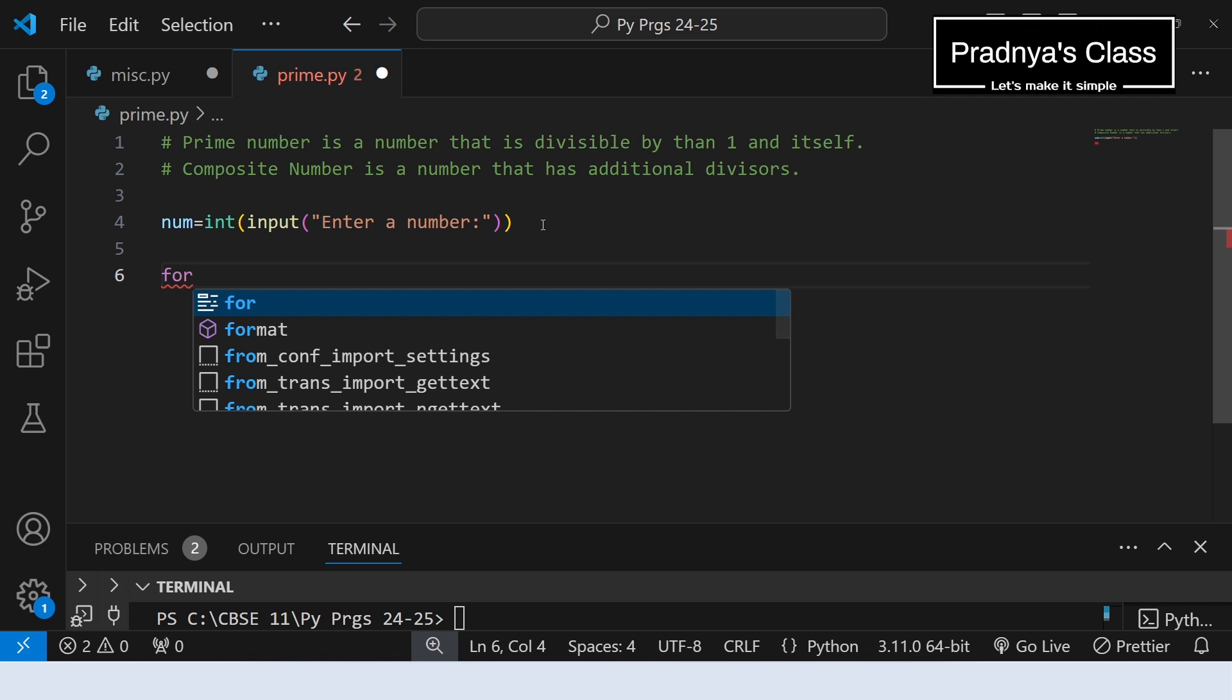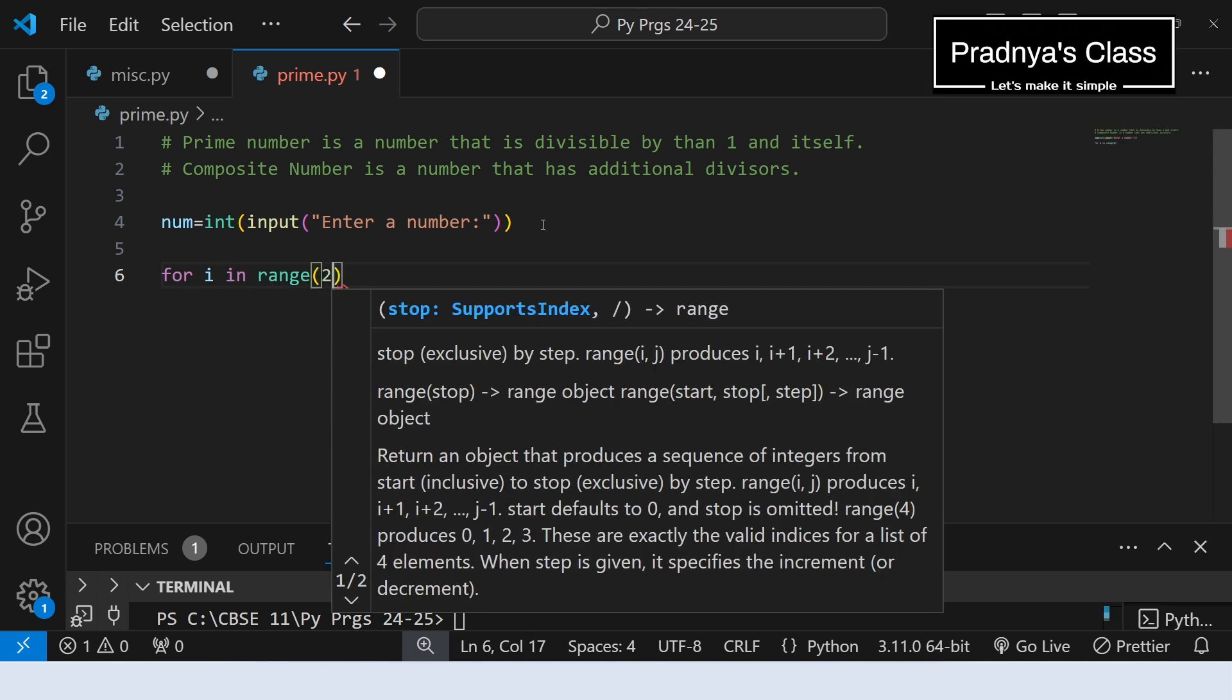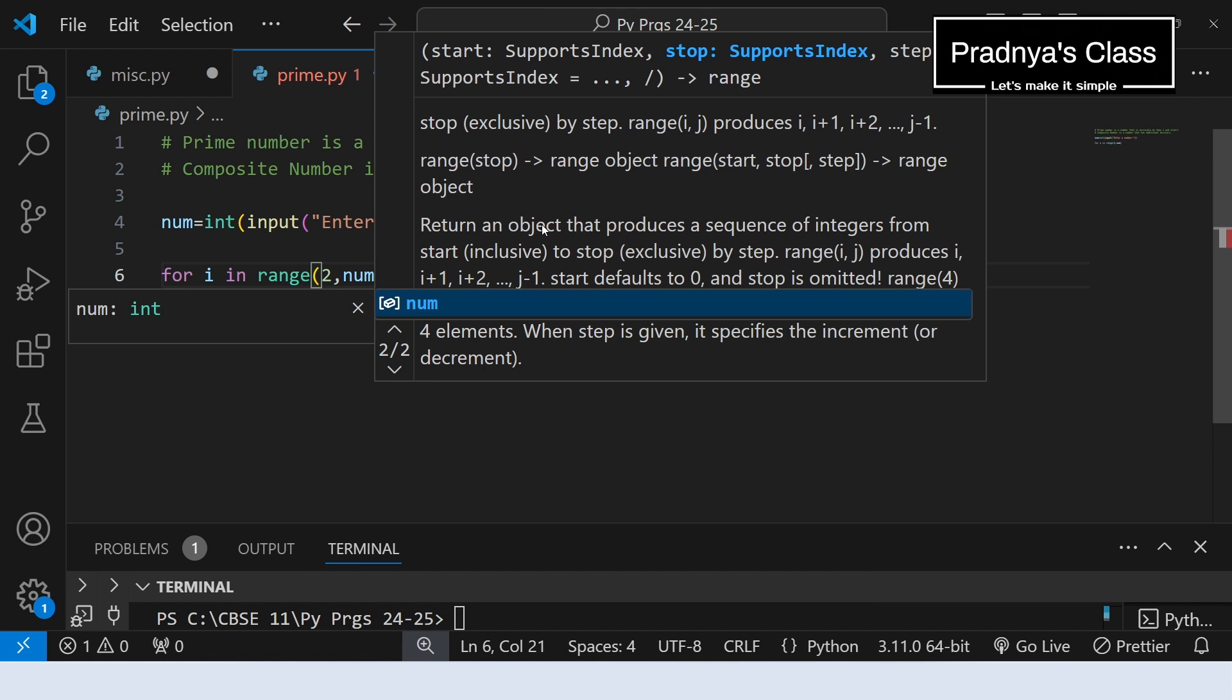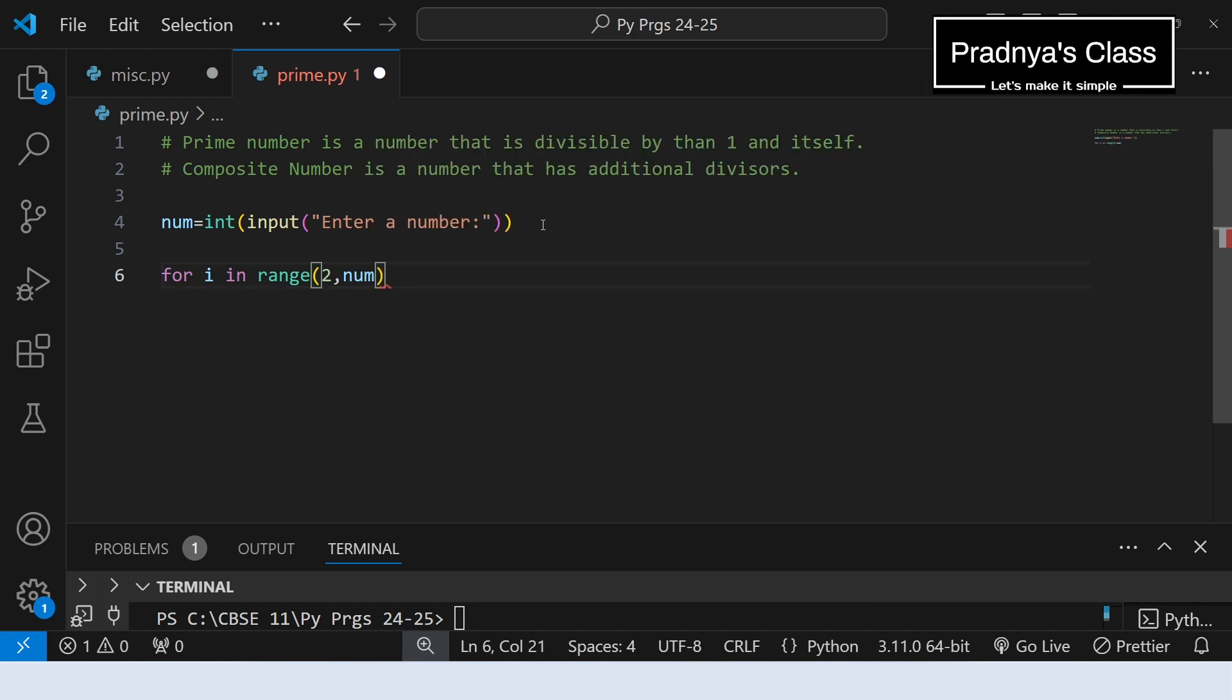It's time to write the for loop. For i in range we will start from 2 and we will write number. Ultimately it will be 1 less than the number because end limit is exclusive. Now using if we will check this number is completely divisible by the value of i. If remainder equals 0 means it is divisible by the value of i.